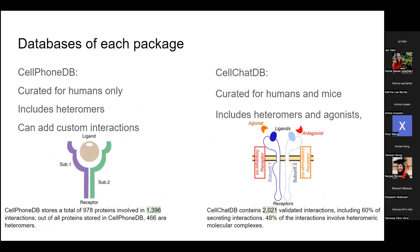They each curated their own database. Starting with the CellPhoneDB database, it was curated for humans only. A lot of previous packages did not include heteromers. For example, some receptors have two proteins that need to join in order for the receptor to work. But a lot of previous packages and databases just had a ligand-receptor interaction and didn't really consider anything that had subunits, so it was quite limited. This was an improvement.